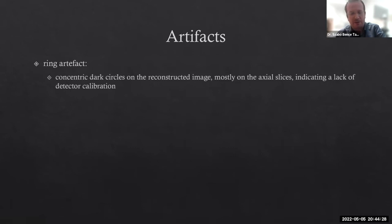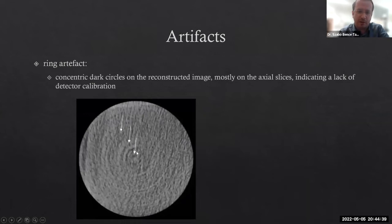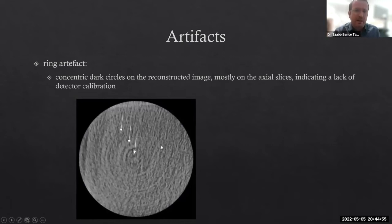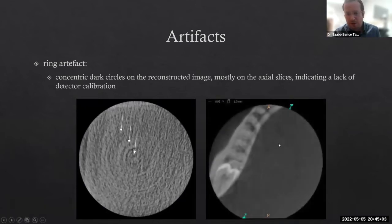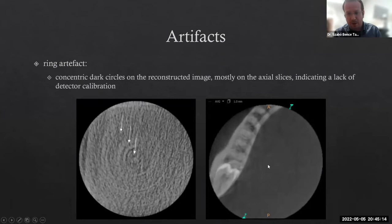The CBCT properties-related artifacts: first, the ring artifact. What we find are concentric dark circles visible next to each other on the reconstructed image. It can mostly be recognized on the actual reconstructed images, indicating a lack of detector calibration. So you have to consider the calibration of your device. Here is a less intensive example — on the actual slice, we can see concentric dark circles on the reconstructed images.